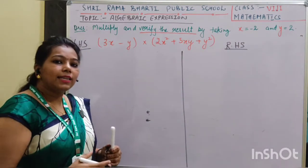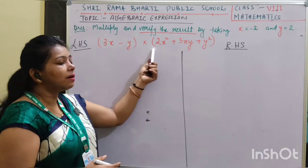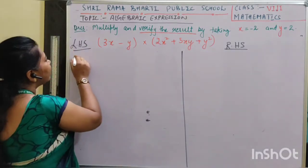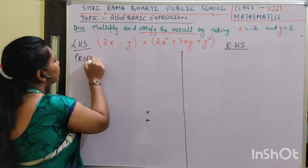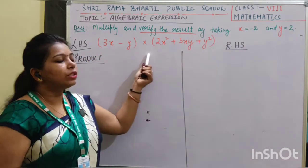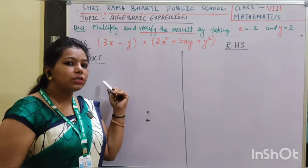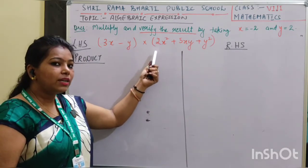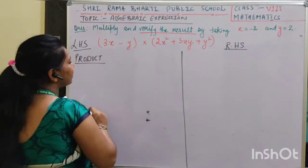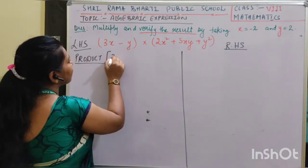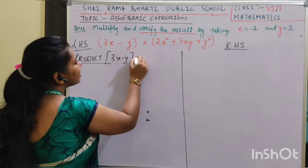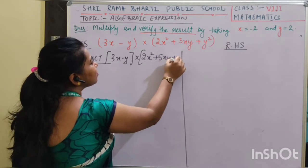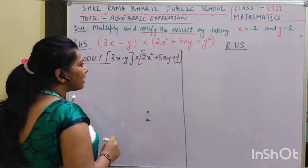So LHS: first we will multiply the numbers and find the product. We will find the product and then put the value in the product of the given expression. So let's start. If we find the product of the numbers, the numbers are (3x minus y) multiplied by (2x squared plus 5xy plus y squared). This is my number.